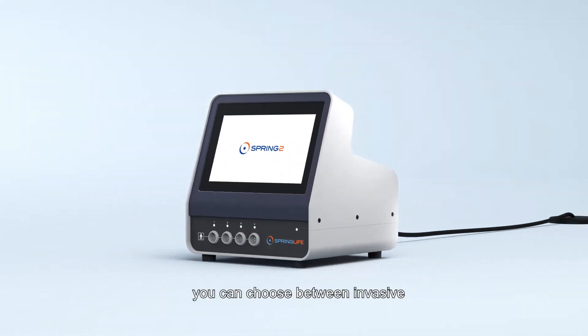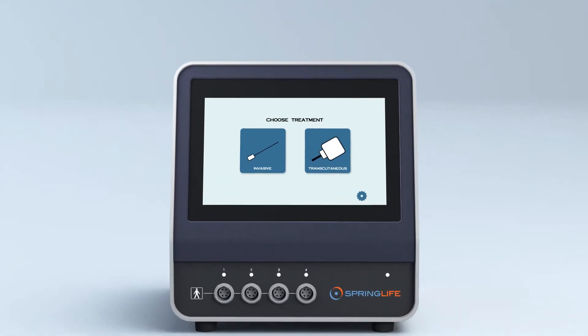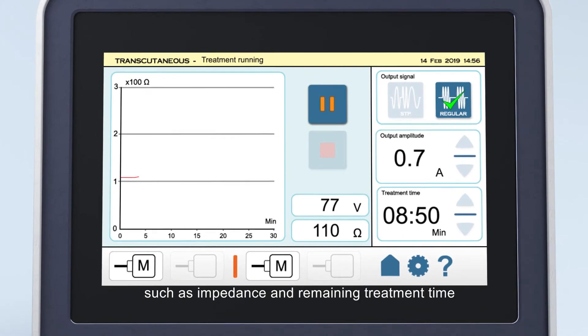After starting up the Spring 2, you can choose between invasive and transcutaneous treatment. During a procedure, the screen shows all the information you need, such as impedance and remaining treatment time.